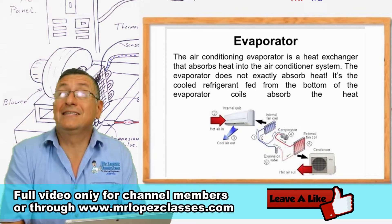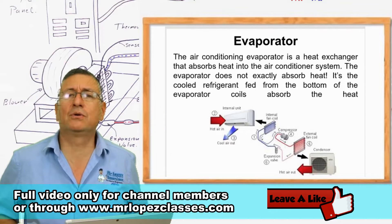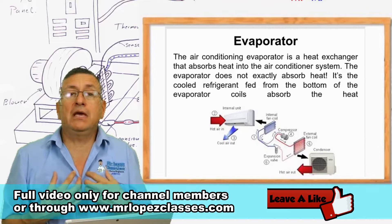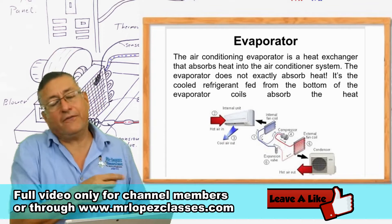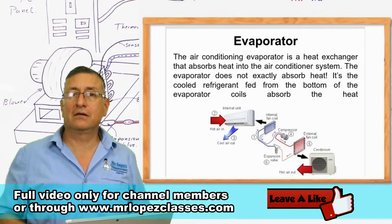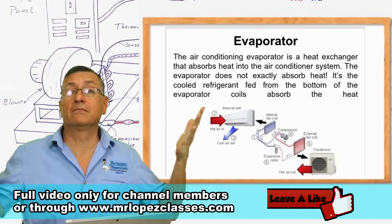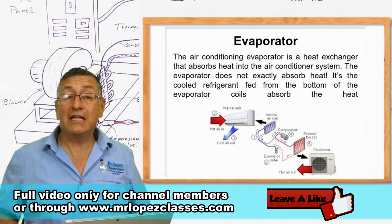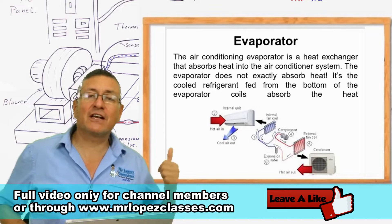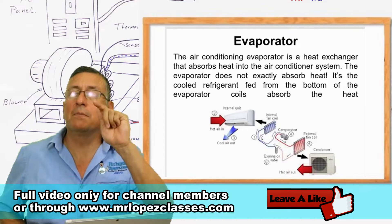At ambient temperature the refrigerant is 100% vapor, but that temperature is practically frozen for you and me. For the refrigerant, however, it is too hot. In the output of the evaporator the refrigerant is superheated — completely vapor. But if you touch that pipe at the output of the evaporator, it feels extremely cold.